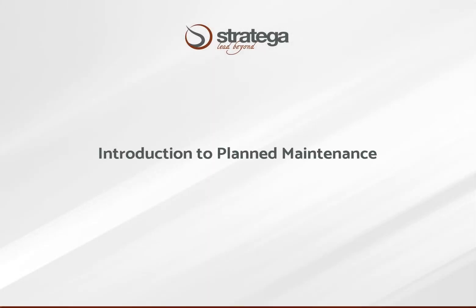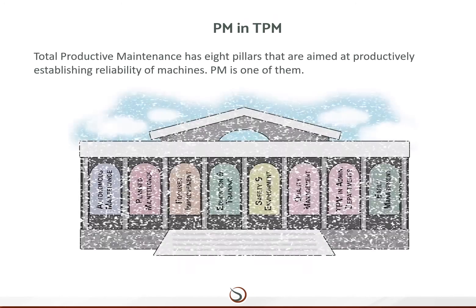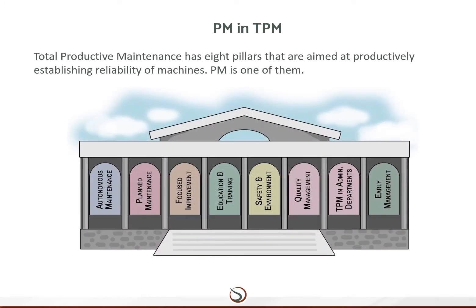Welcome to the Introduction to PM. In this video, we will shortly introduce what Planned Maintenance is and why and how we implement it. Total Productive Maintenance has eight pillars that are aimed at productively establishing reliability of machines. Planned Maintenance is one of them.